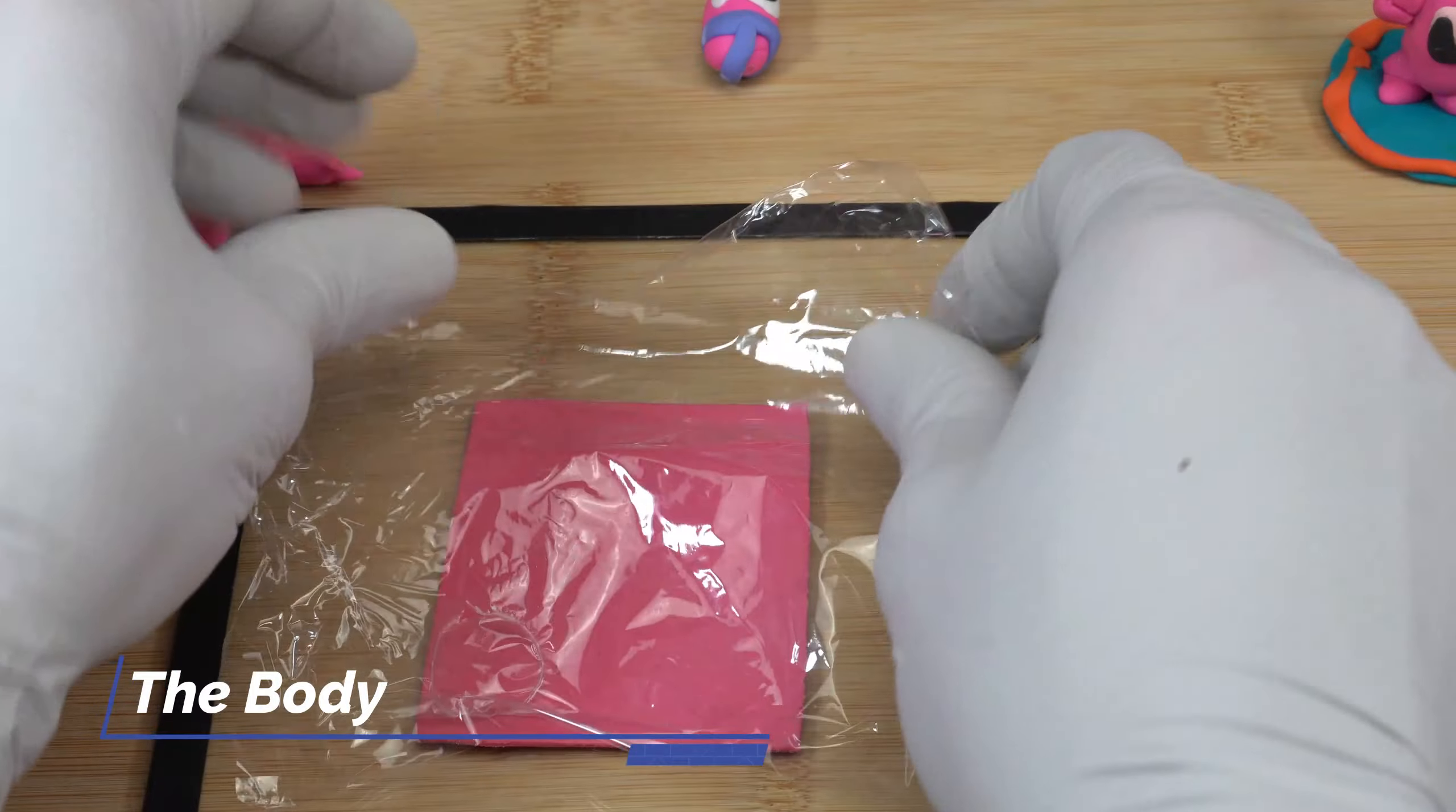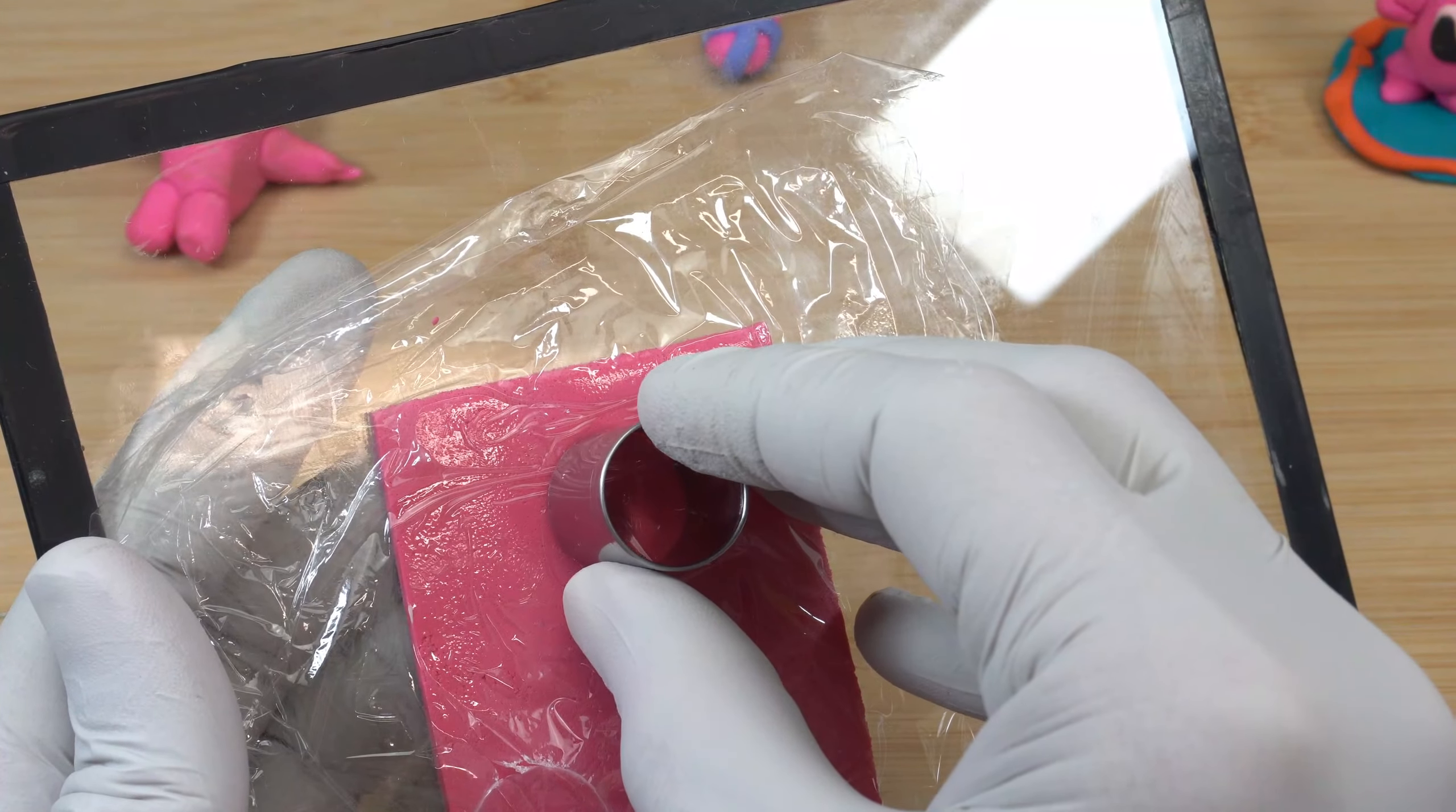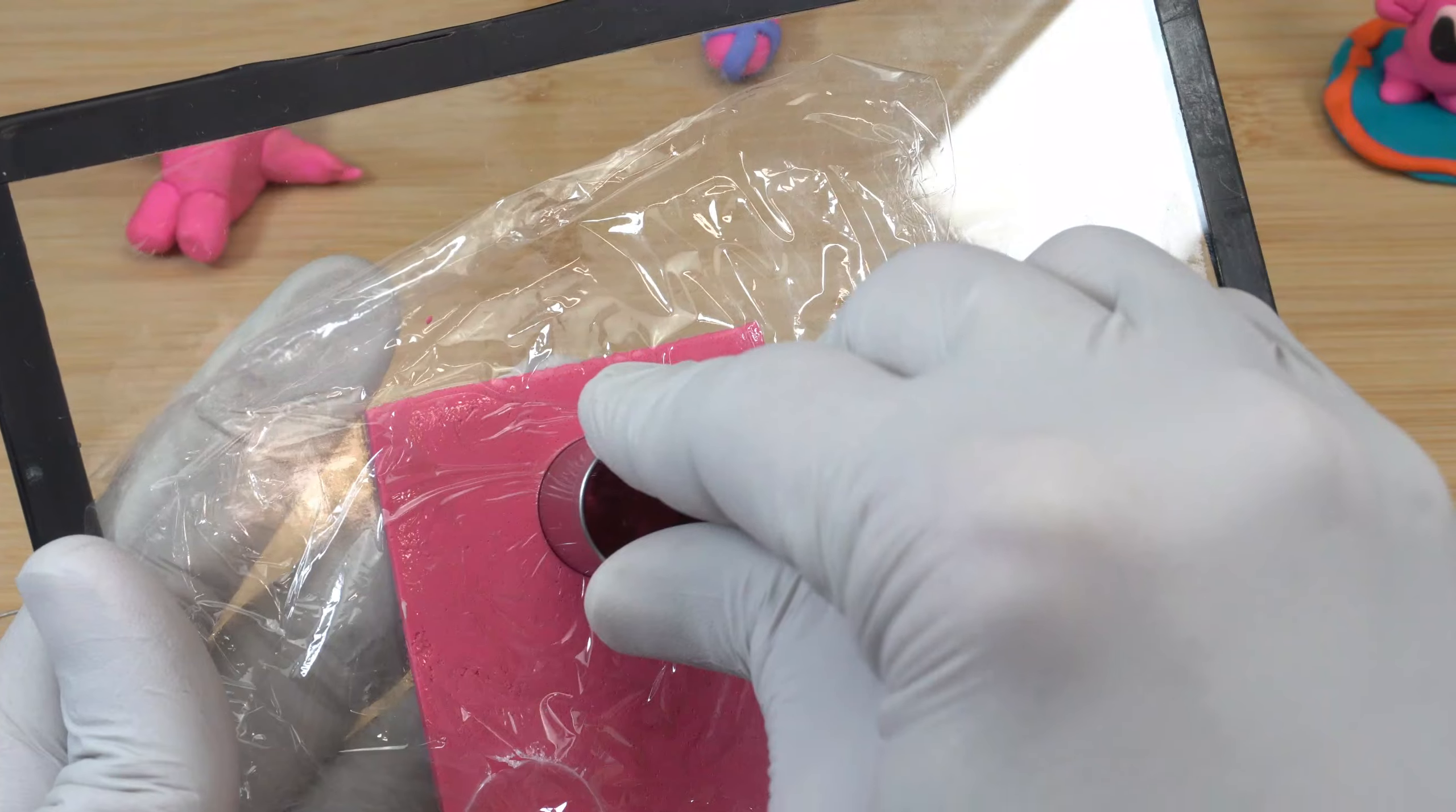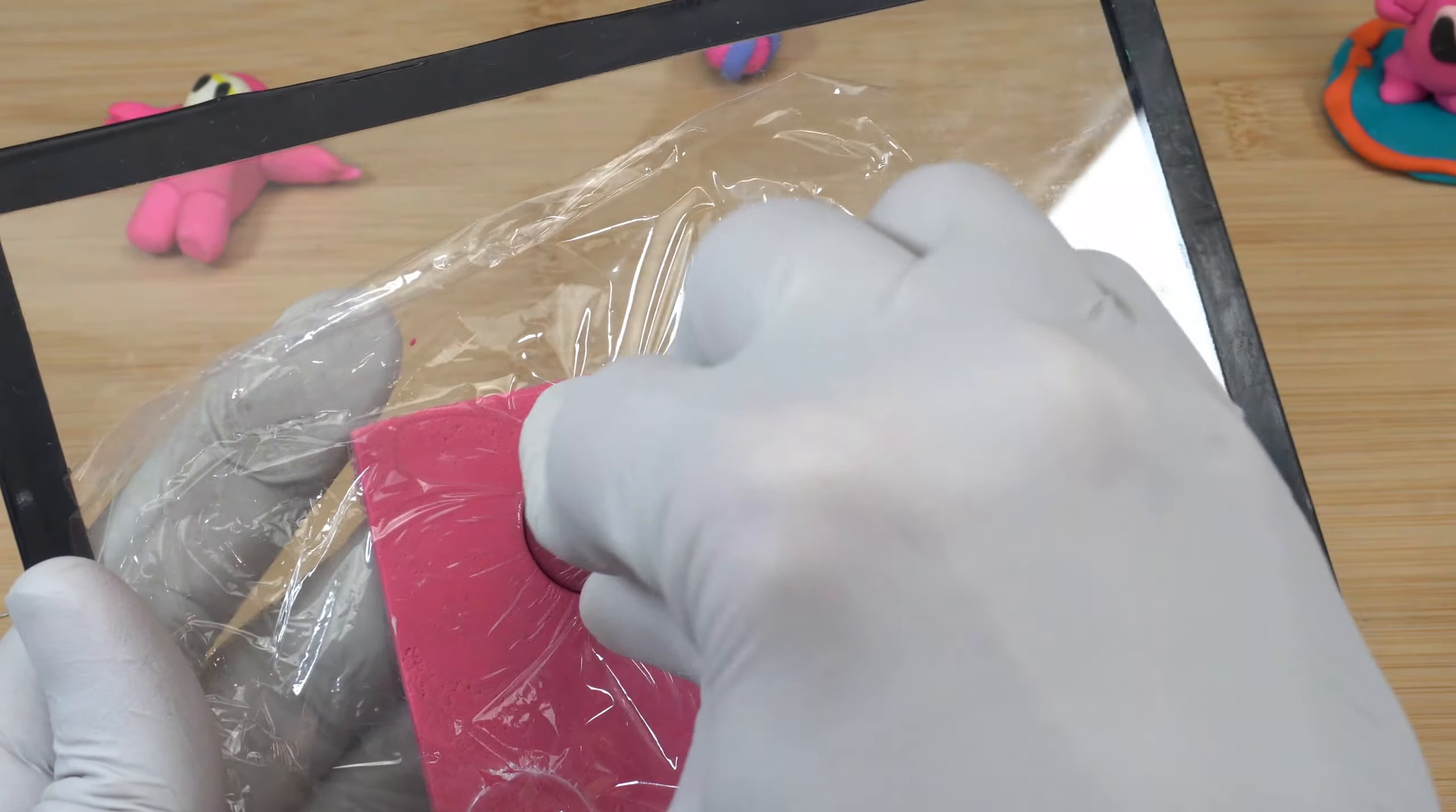The body. For the body, I'm covering the armature with pink clay. I'm creating a space for the face using the round cutter.